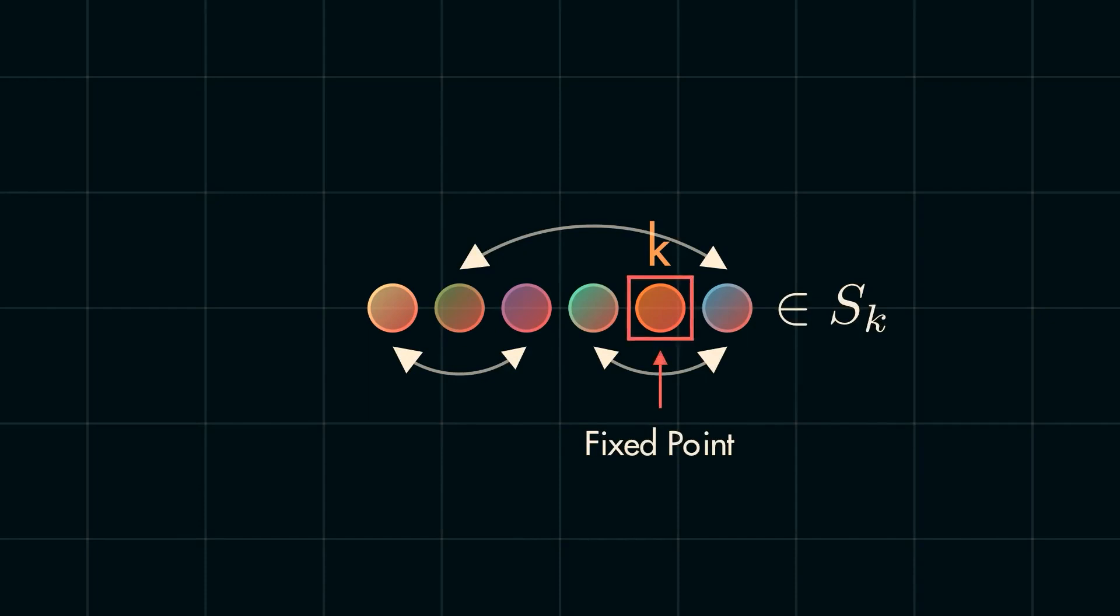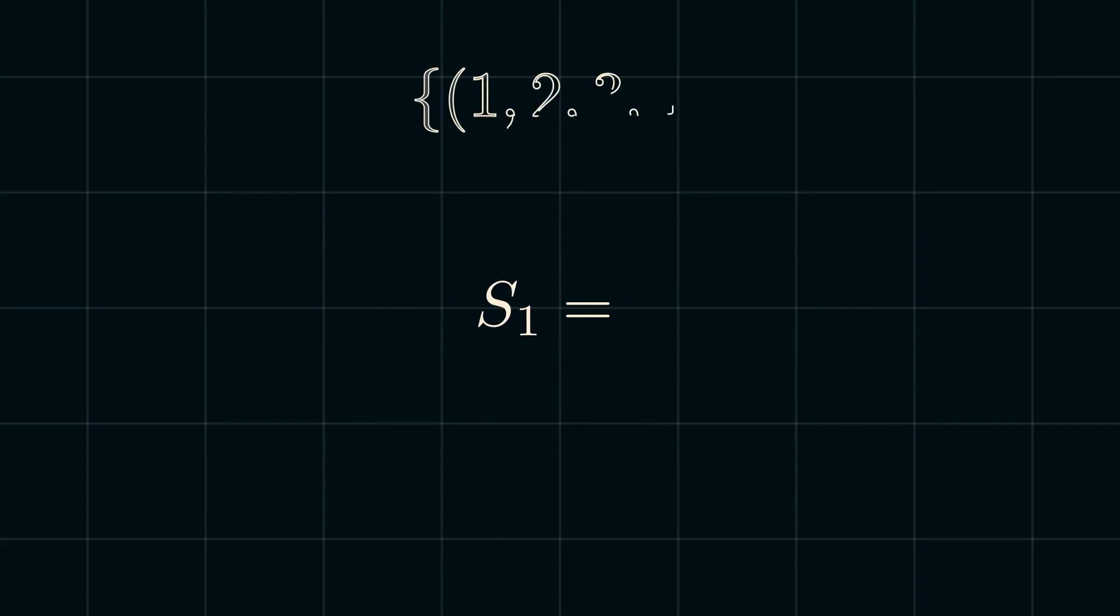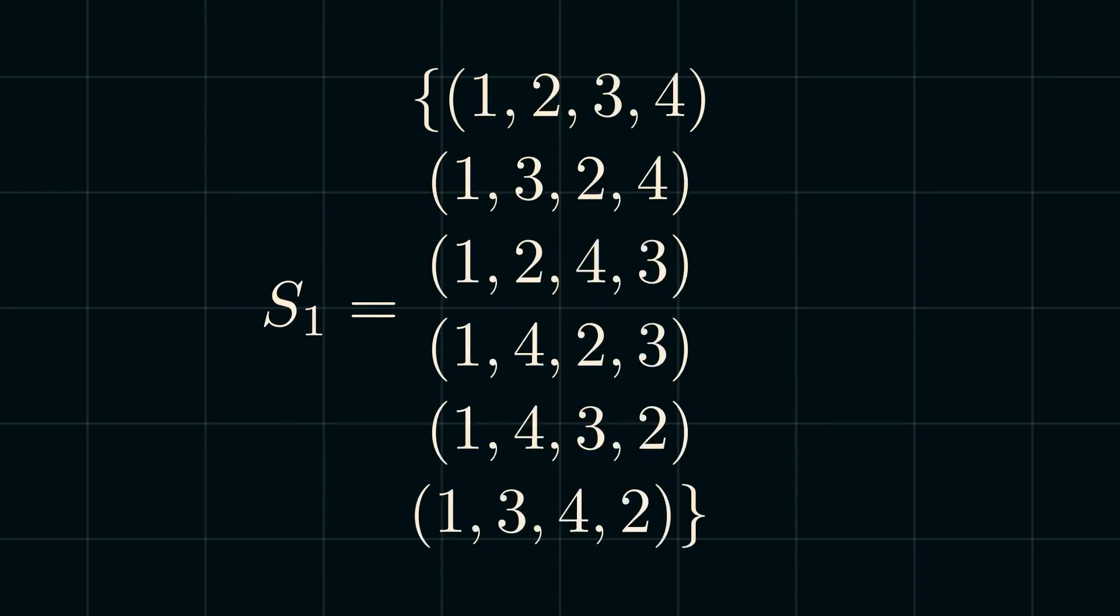For example, with n equals 4, s sub 1 would contain the permutations 1, 2, 3, 4; 1, 3, 2, 4; 1, 2, 4, 3; 1, 4, 2, 3; 1, 4, 3, 2; and 1, 3, 4, 2. Notice that the six permutations here match up with the total number of permutations for a set of three elements, 3 factorial. And this is not a coincidence. Because one of the elements is fixed, that means we can think of finding permutations of a set of four elements with one element fixed the same thing as finding the number of permutations for a set of three elements.